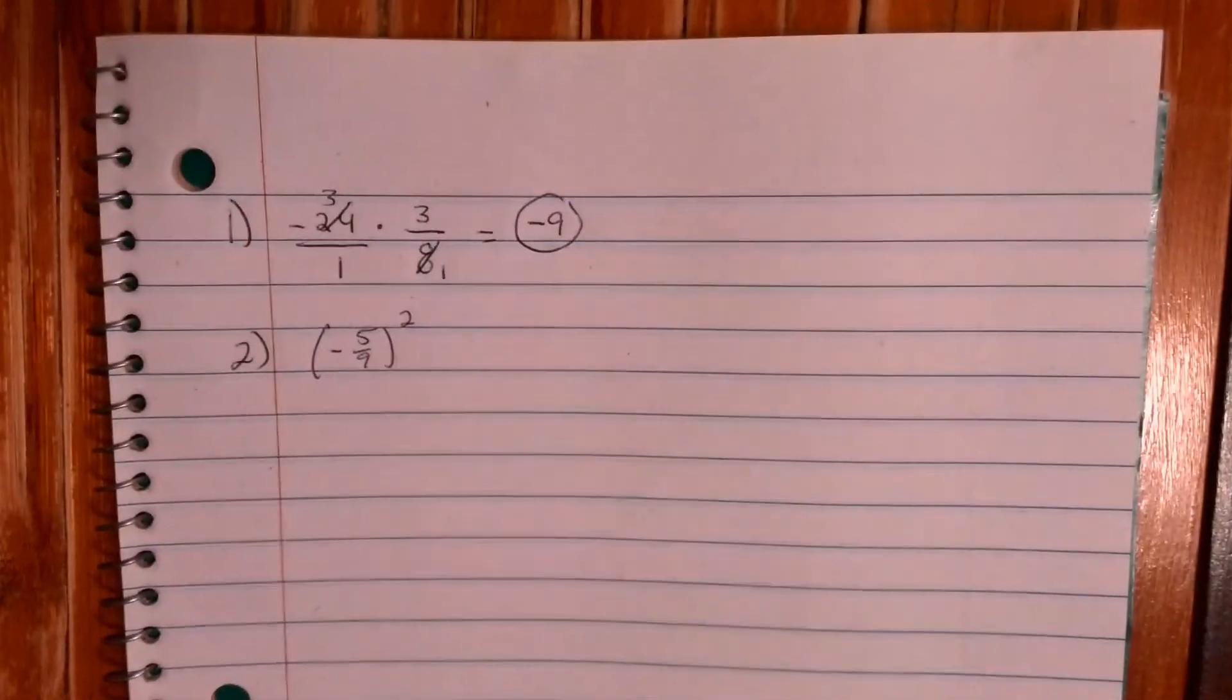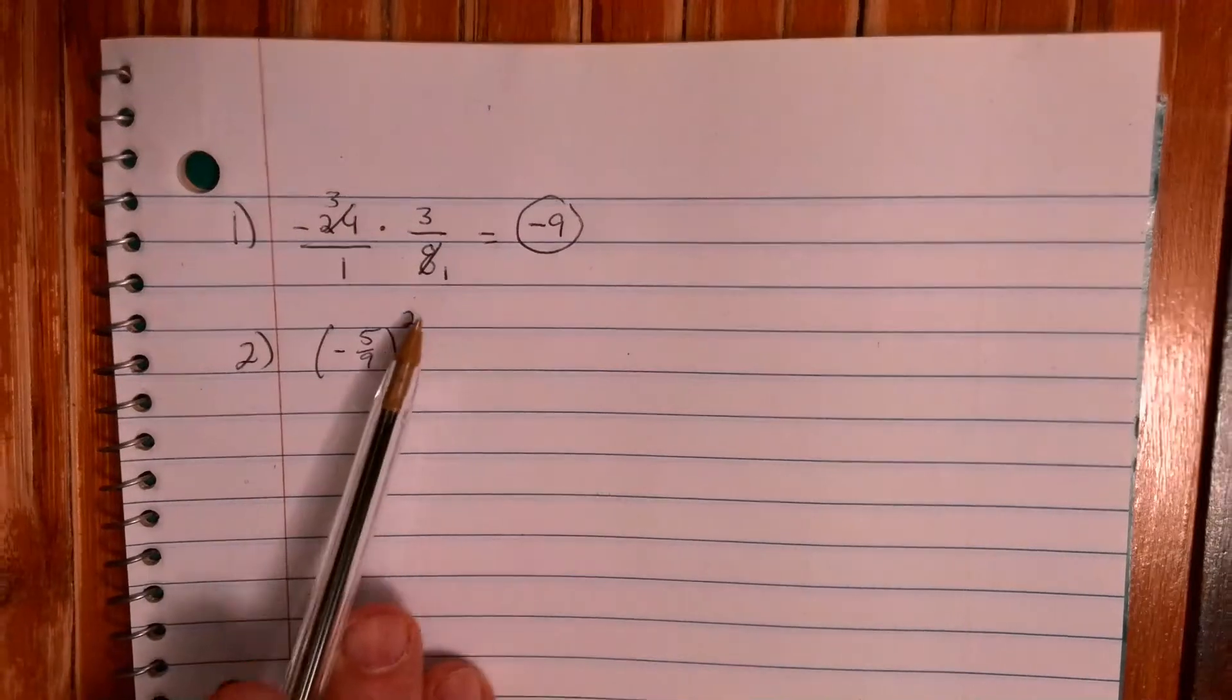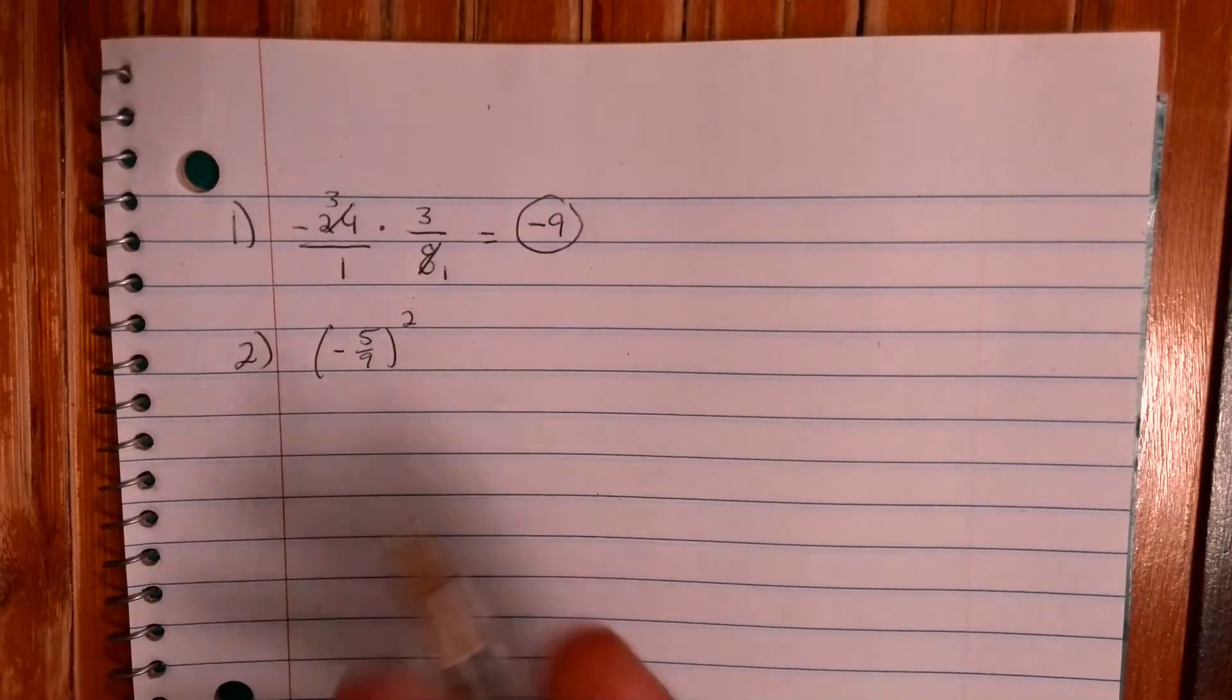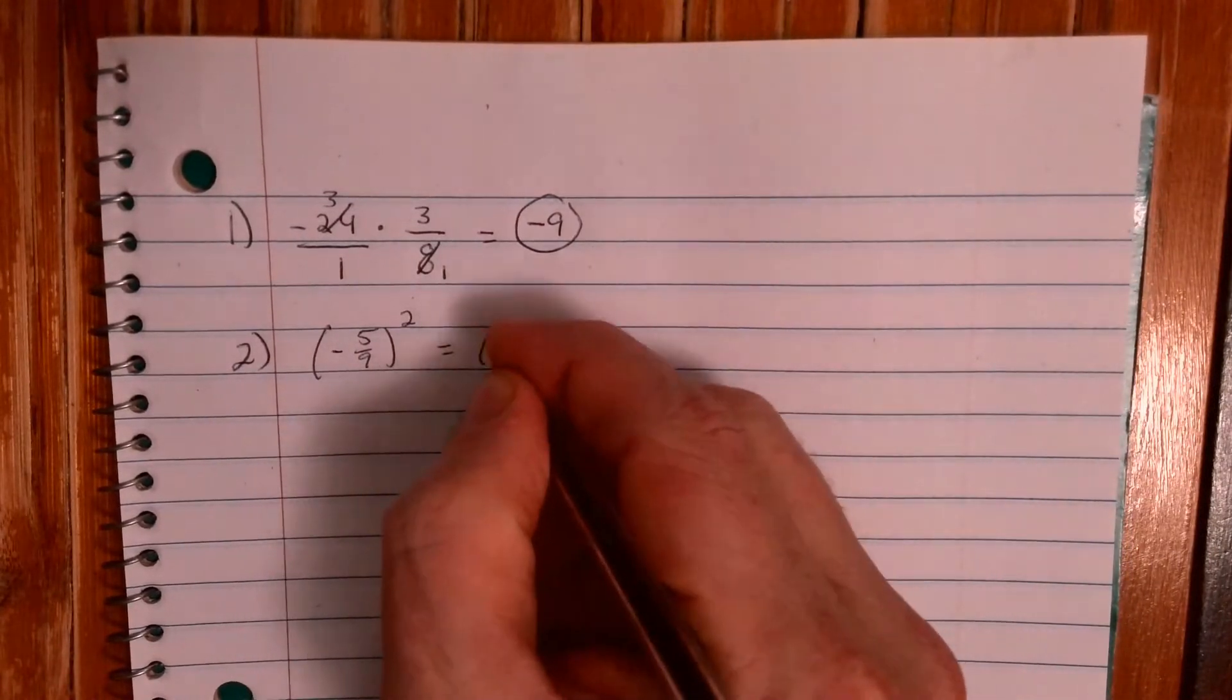Well there's a couple different ways you can think of this. One, you could think of this as taking the numerator to the second power. You could take 5 squared, 25, 9 squared 81. So it's kind of like that, going back to a little bit like exponent rules. I'm just going to show it as negative five-ninths times negative five-ninths.